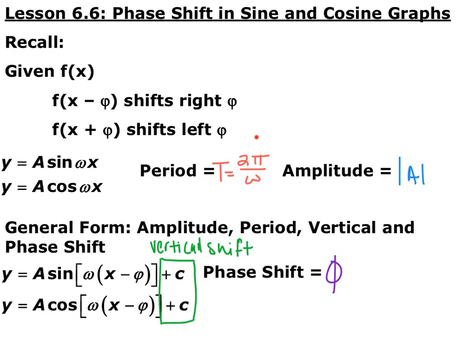The parent function has a period of 2π for both sine and cosine. So if we have some kind of horizontal stretch or compression, that will affect how long it takes to complete one cycle. The general form is y equals A sine or cosine of omega times the quantity x minus phi, plus c, where c is your vertical shift and phi is your phase shift or horizontal shift.